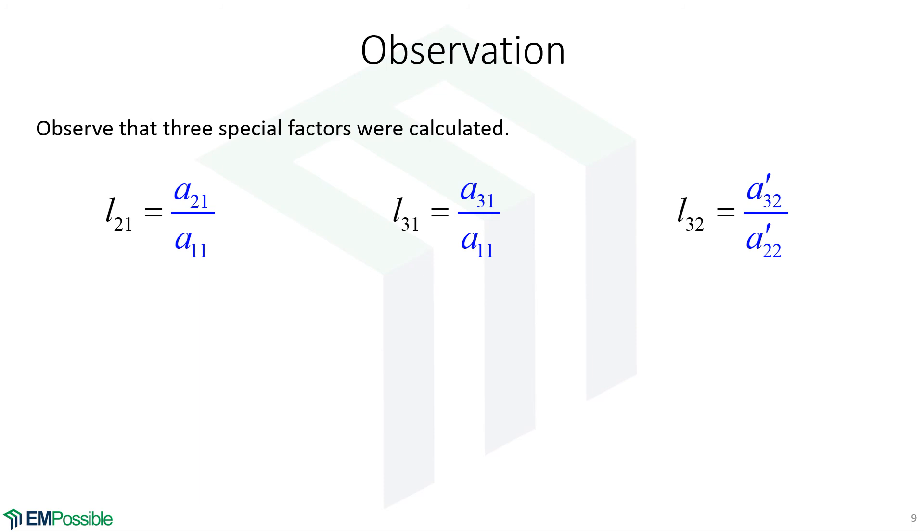Another thing to observe, remember those factors that we used. We had an A21 over an A11. That was in our first forward substitution step. We had an A31 over an A11. And we had an A32 over an A22 prime here. So these terms will turn up when we get into LU decomposition. But they're constants that we calculate naturally from Gauss elimination anyway. So remember those, file those away in your brain.